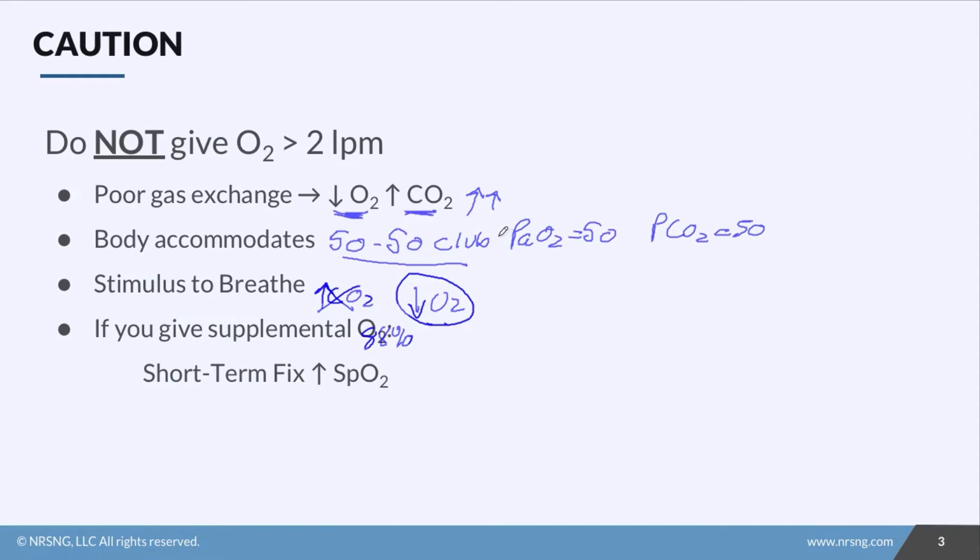Now you started to decrease their respiratory drive and their respiratory rate will begin to drop. Their CO2 levels will begin to rise even higher because now they're not breathing much. And this can lead to CO2 toxicity sometimes called CO2 narcosis. Their level of consciousness will drop dramatically. They'll struggle to protect their airway and they can die.